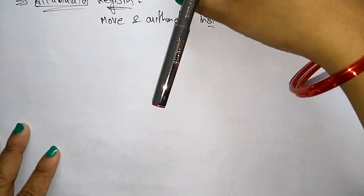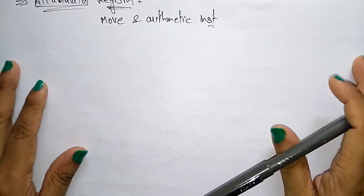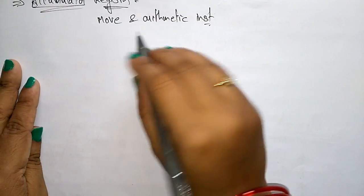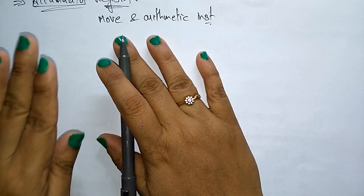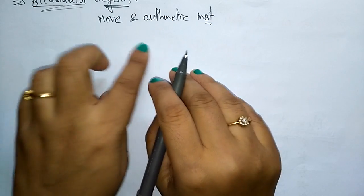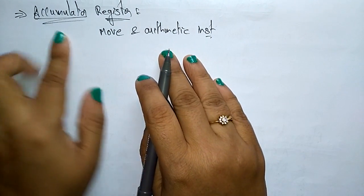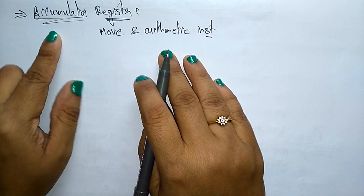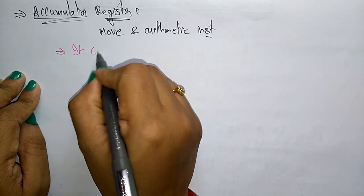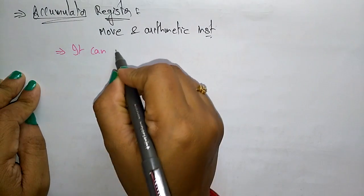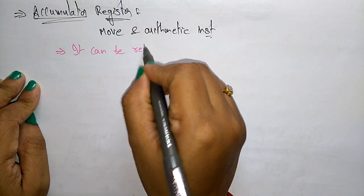The first register to discuss is the accumulator. The accumulator register is commonly used for moving operations and for calculating arithmetic instructions.